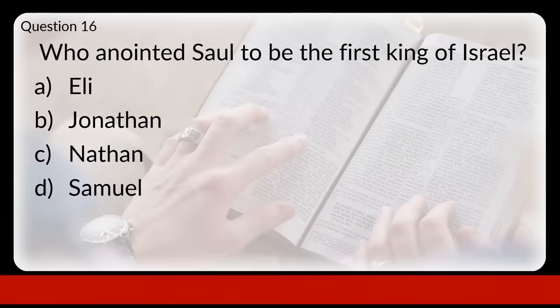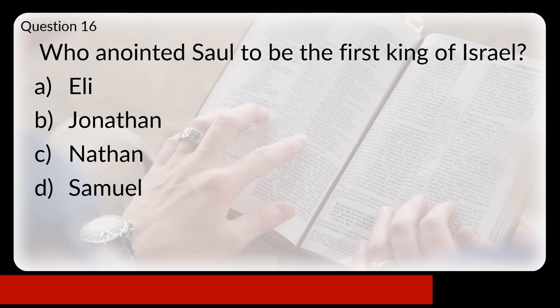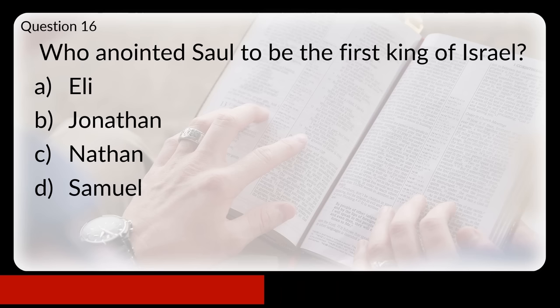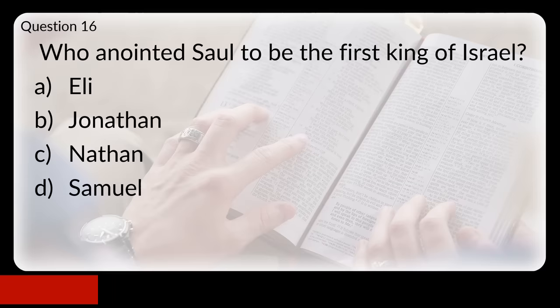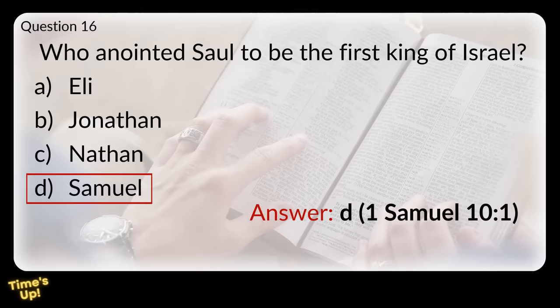Question sixteen: who anointed Saul to be the first king of Israel? Was that Eli, Jonathan, Nathan, or Samuel? The answer was D, Samuel.